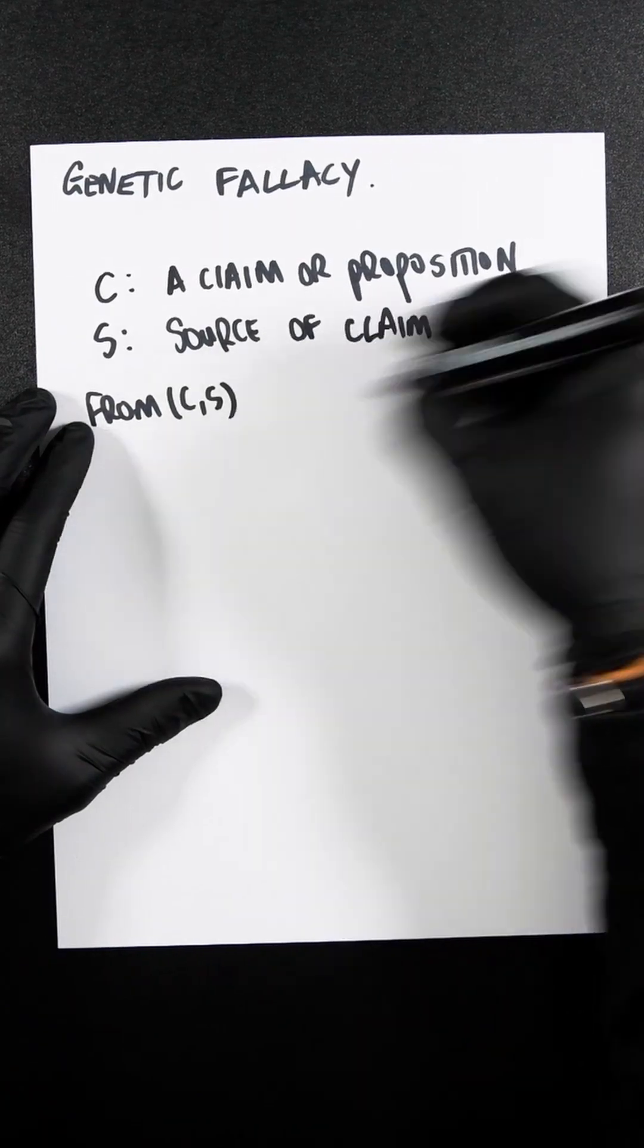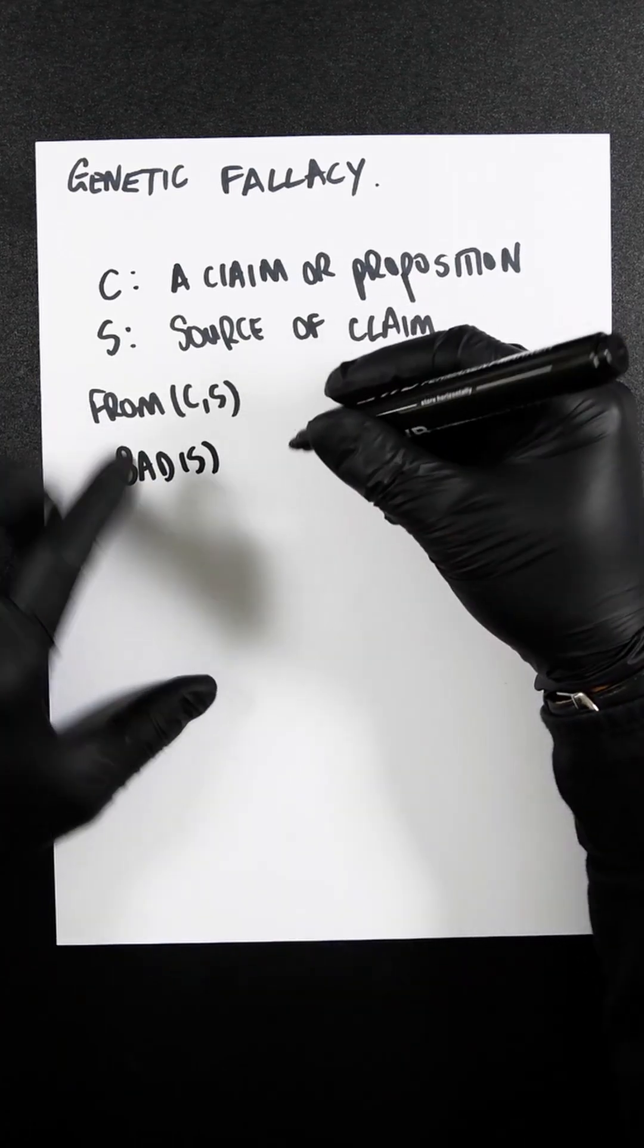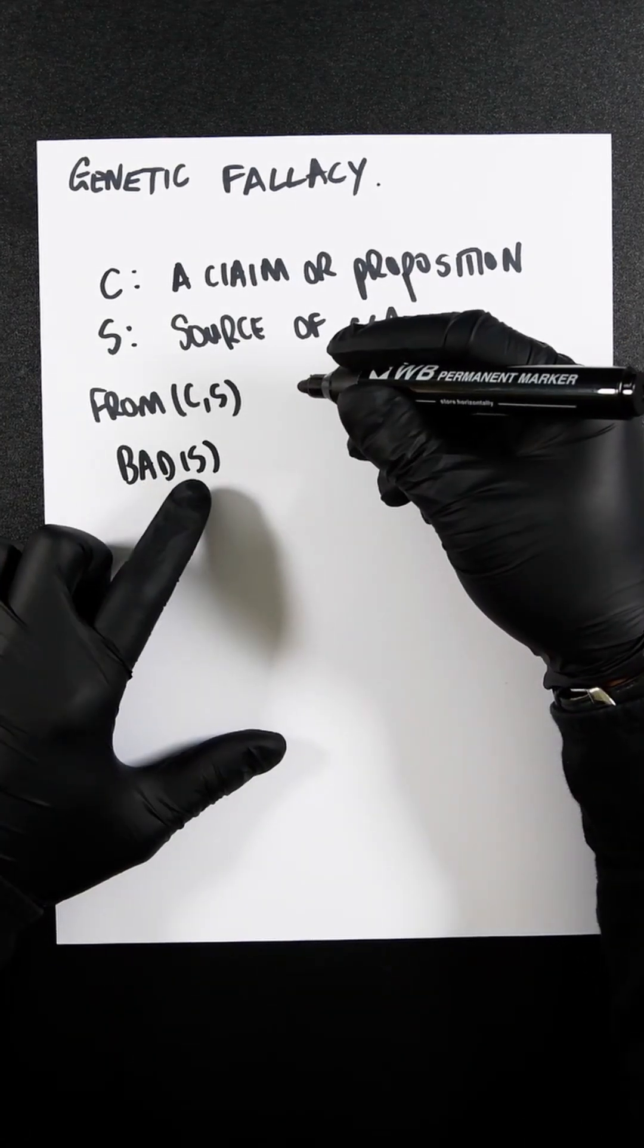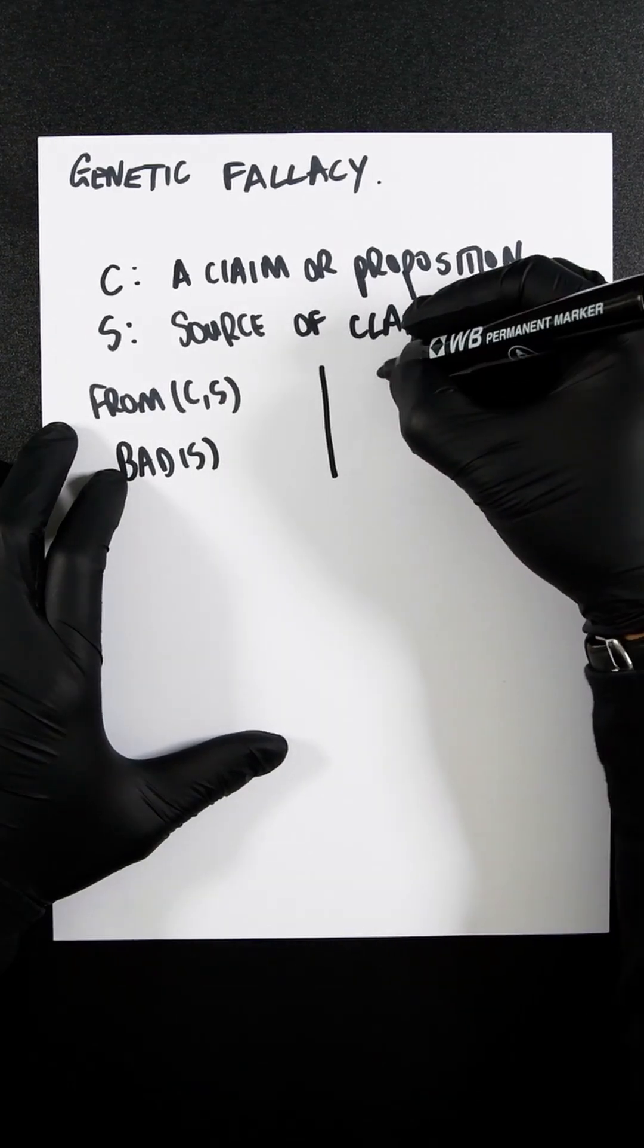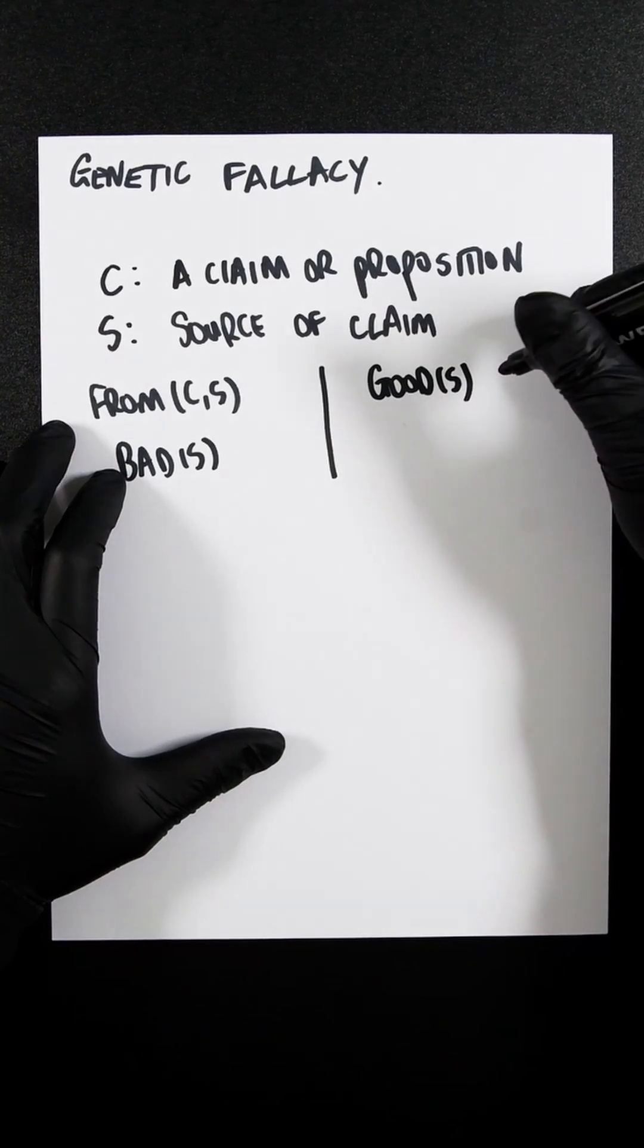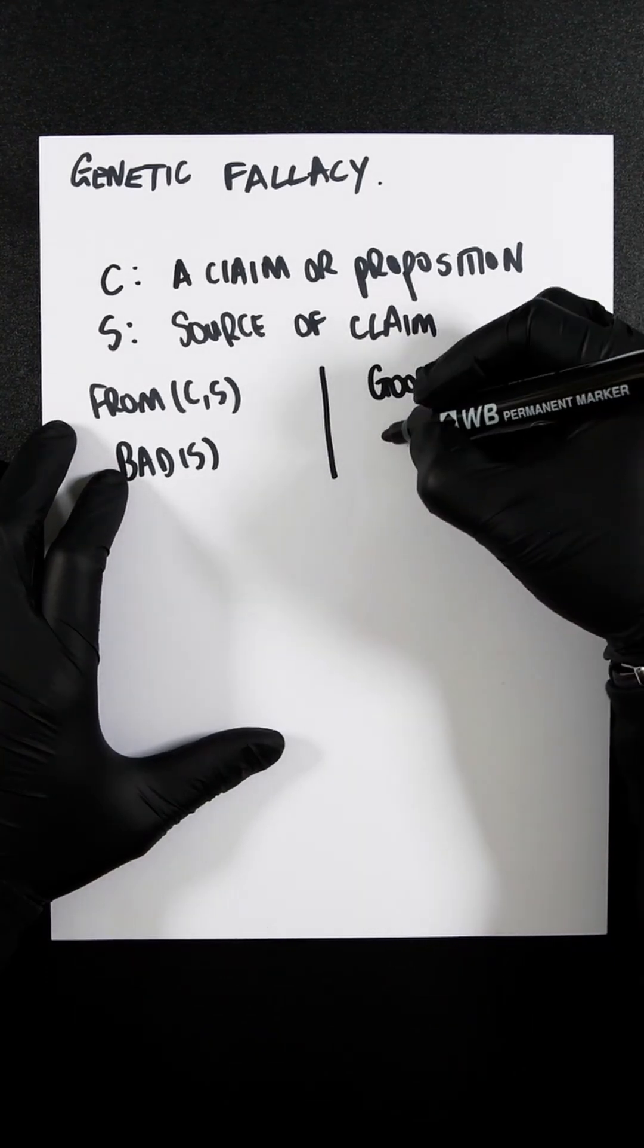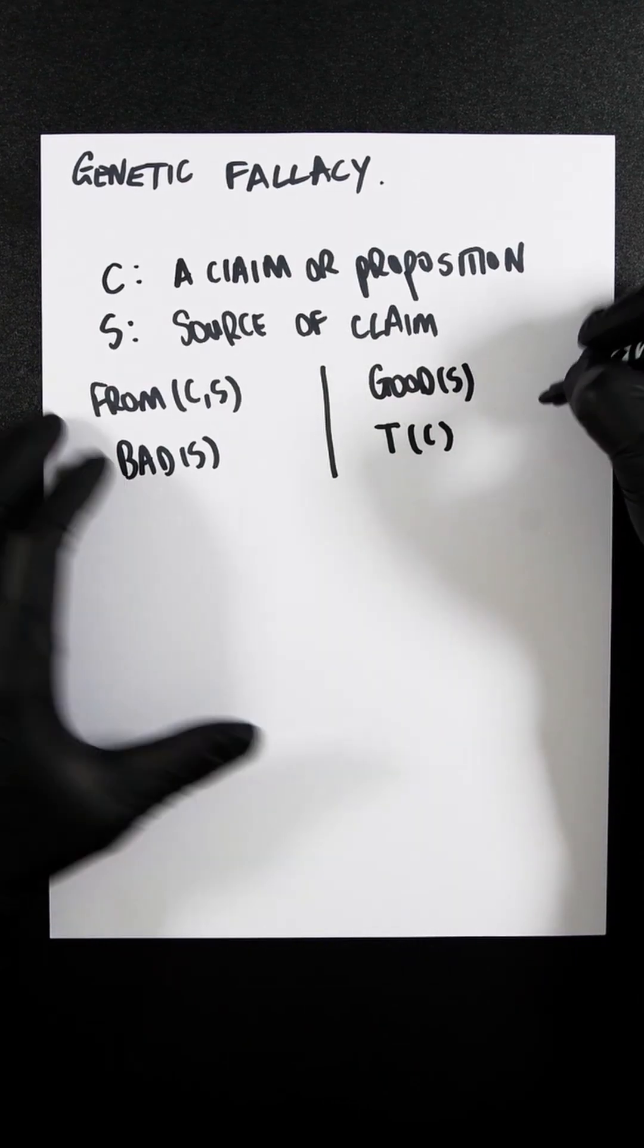And then we're going to have bad S, which means source S is unreliable or bad. Then we're going to have good S, which is source S is reliable or good. And then we can have, let's say, TC, which is claim C is true.